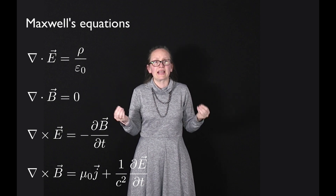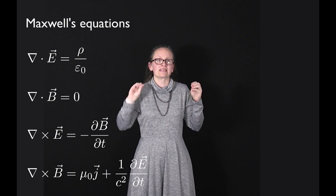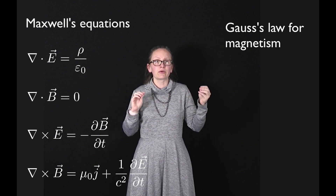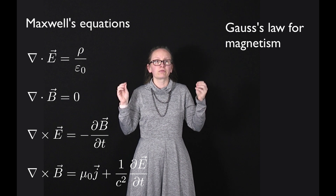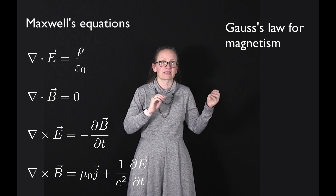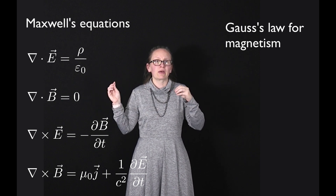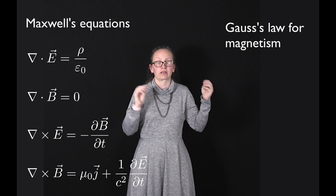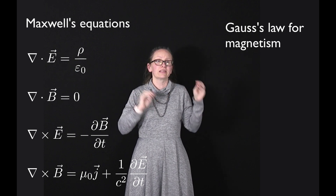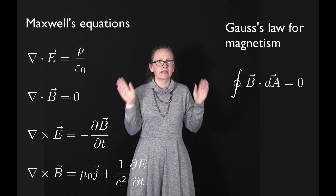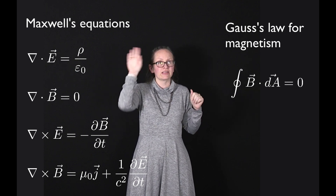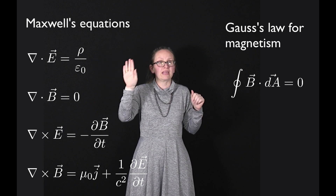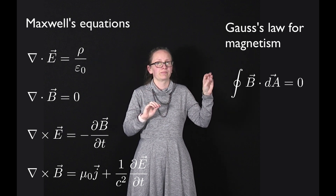Maxwell's second equation, del dot B equals zero, is another way of writing Gauss's law for magnetism. This tells us that there's no flux through a closed surface, and in integral form we write this as the integral over a closed surface of B dot dA equals zero.